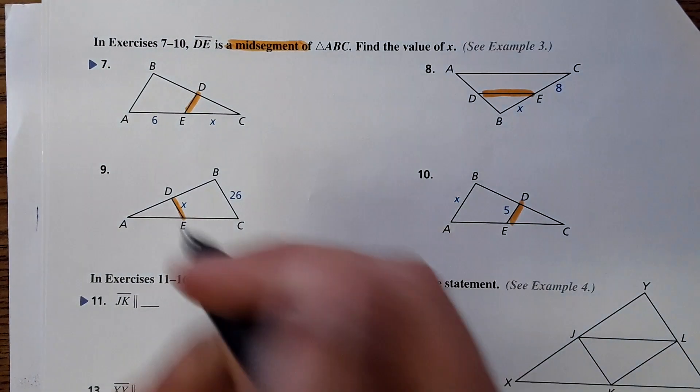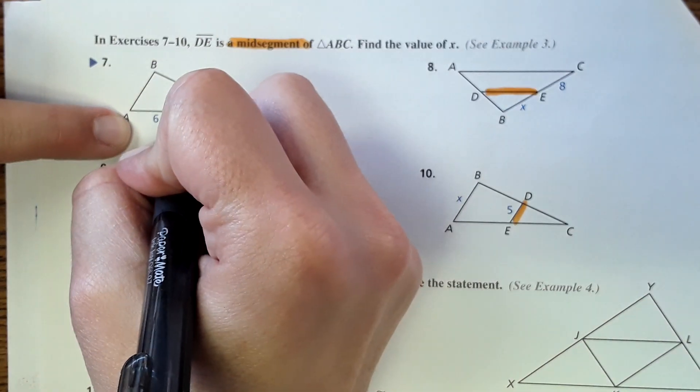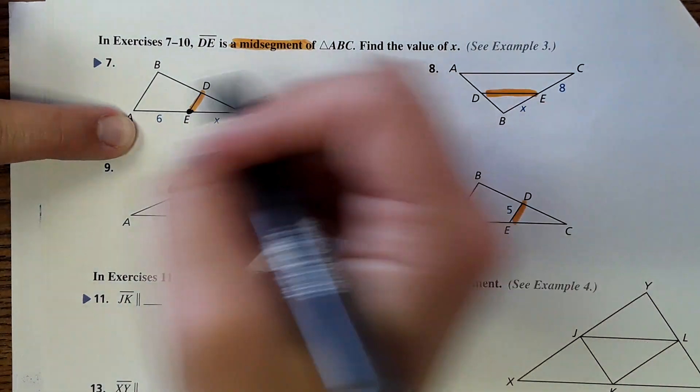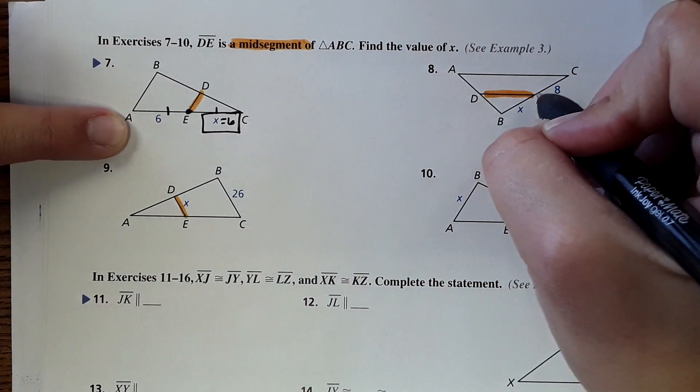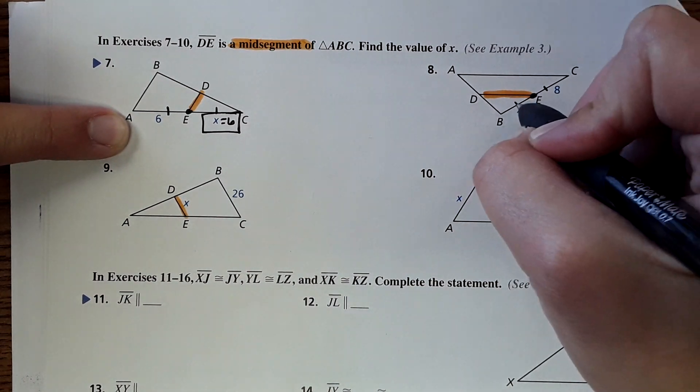Just like we just did, this is a midpoint here, so therefore this is the same length as this, so this is six. This right here again hits at the midpoint, so these two are the same measure, so x must equal eight.